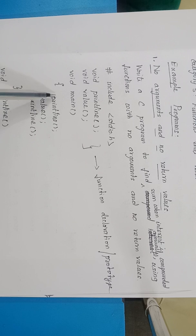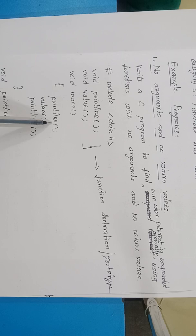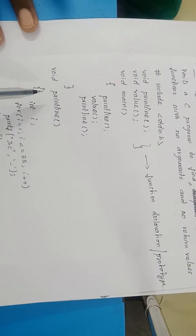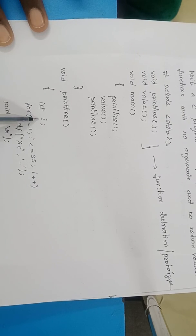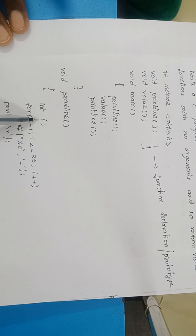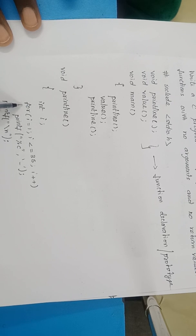Entering into void main, there is no declaration or anything else. Directly, we are invoking print_line, so the control passes to the print_line function outside main. It enters print_line. The local variable i is declared as an integer. Then we have started a for loop. The for loop starts with i equal to 1 and ends with 35, so this loop will be executed 35 times.